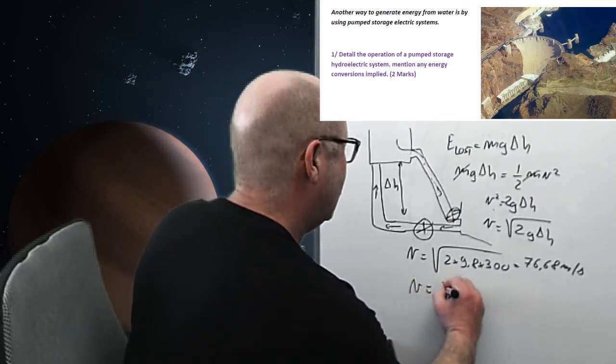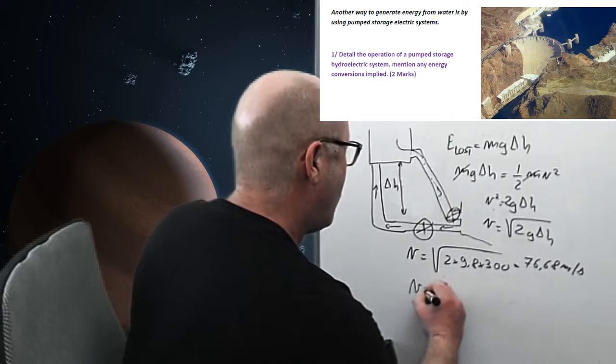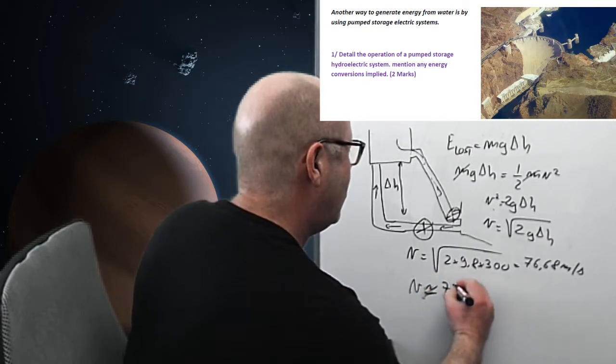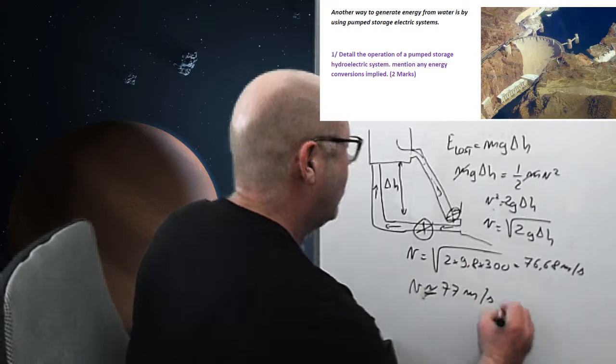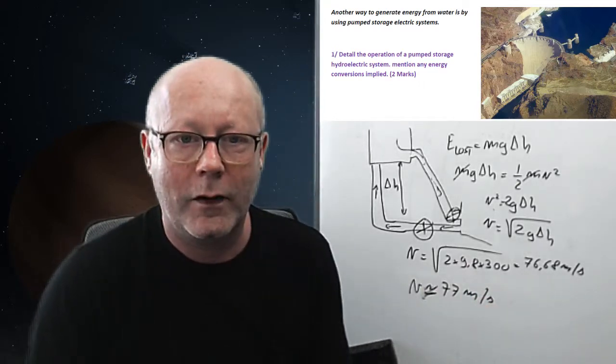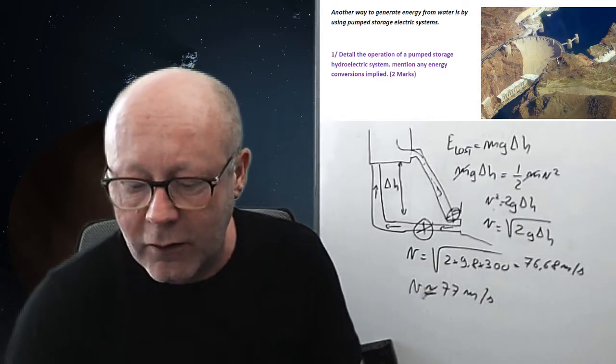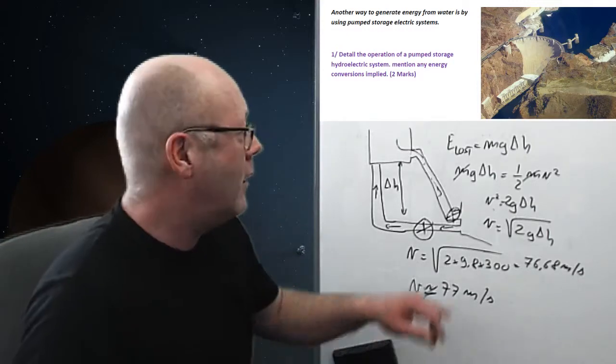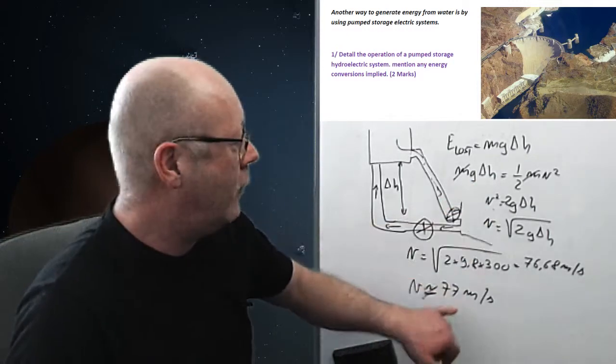But in order to check, I check the next questions and I see, oh, the data given is with two significant figures. Therefore, I will give two significant figures. V equals 77 meters per second. These are the two marks. So, the two marks would probably be to pose this and to get the answer right.